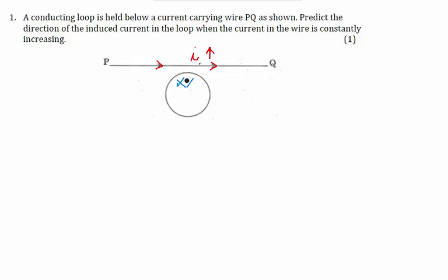The magnetic flux due to this flowing current in PQ through the loop will be inwards. Now because it is inwards and it is constantly increasing because the current increases, that means this flux is constantly increasing. So we write here that this is increasing constantly with time: increasing flux.